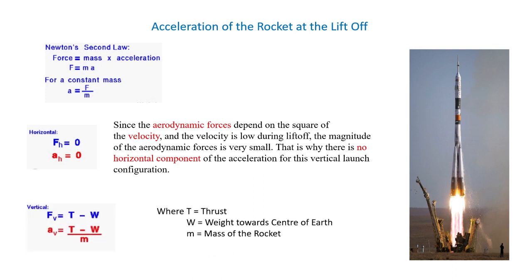Therefore, the vertical equation of force is: Fv = T − W. And the vertical acceleration is: Av = (T − W) / M, where T is thrust, W is weight towards the center of the Earth, and M is the mass of the rocket.